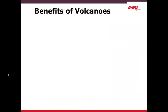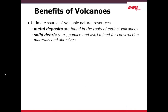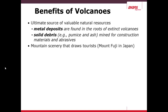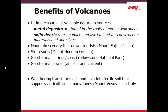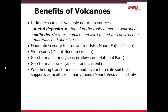There are benefits to volcanoes despite their hazards. These include metal deposits — where we find extinct volcanoes, we quite often find metal deposits. Solid debris such as pumice and ash can be used as building materials. Volcanoes provide mountain scenery which draws tourists; the sacred Mount Fuji in Japan is an example. Semi-active volcanoes host ski resorts, such as Mount Hood in the western United States. Yellowstone is a very well-known geothermal spring, and geothermal power can come from such springs. The weathering of ash and lava produces very fertile, nutrient-rich soil that supports agriculture.